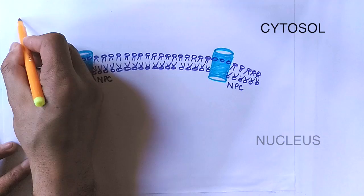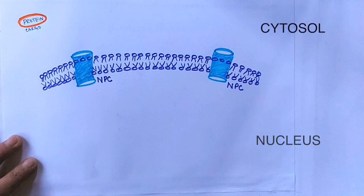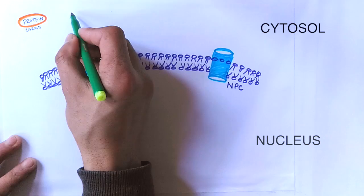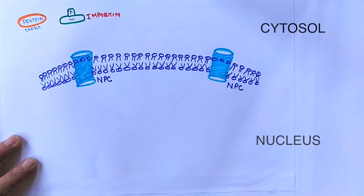We see here in the cytosol we have the protein molecule that acts as a cargo, and this cargo is to be transported into the nucleus. For this transportation, we have karyopherin molecules or karyopherin proteins, and in this case we have the importin which will carry the molecule from cytosol into the nucleus.